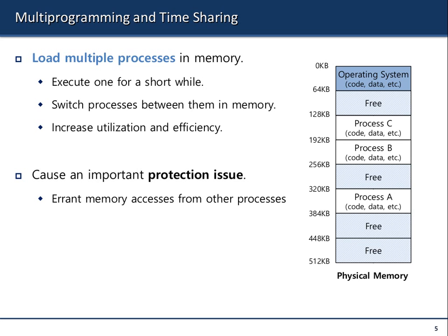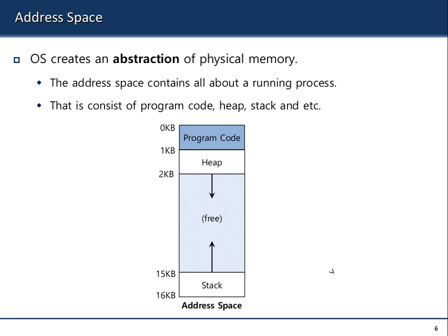Let's look at the address space. The operating system, when a program is loaded from disk into memory — via fork, exec, etc. — gives each running process an address space. The address space is the memory area where the process resides. You have the program code, maybe some data, then you have the heap for dynamic memory which grows upward, and the stack which grows downward.